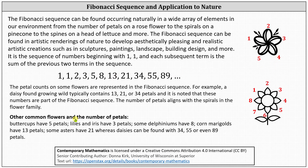Here are some common flowers and the number of petals. Buttercups have 5 petals. Lilies and iris have 3 petals. Some delphiniums have 8. Corn marigolds have 13 petals. Some asters have 21, whereas daisies can be found with 34, 55, or even 89 petals — all of which can be found in the Fibonacci sequence.